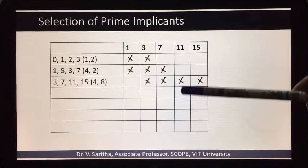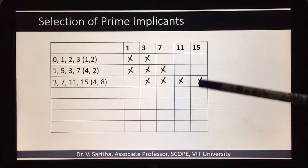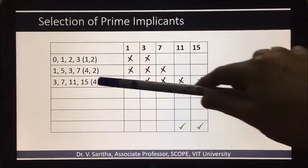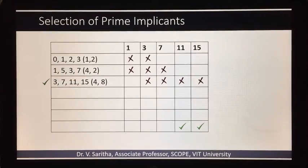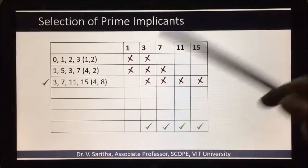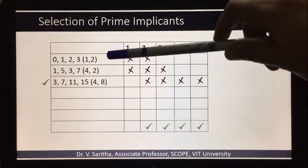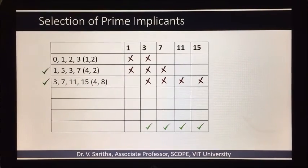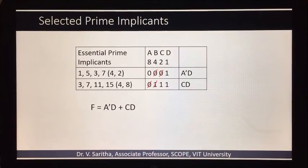Now observe each column. We have a single cross in case of 11 and 15, so tick them both because it is a corresponding prime implicant. Check that. And because 3 and 7 also are included in that we can include 3 and 7. Now in order to select 1 which is not selected at all, we can either select the first one or second one. In this example I am selecting the second one.